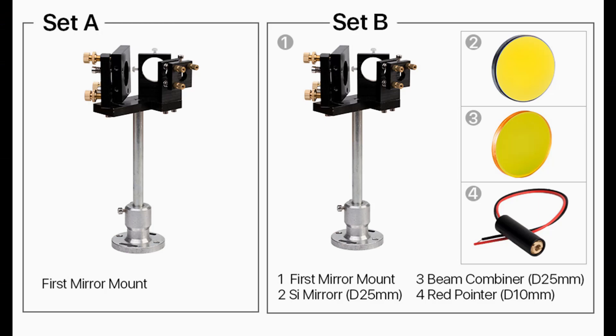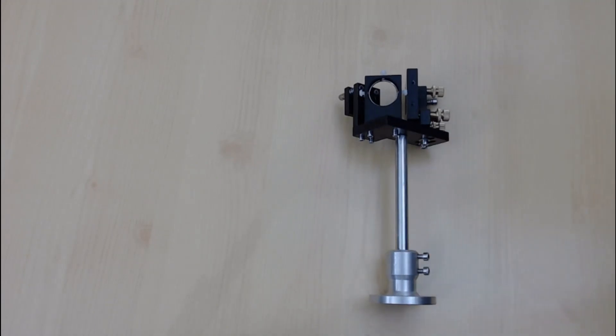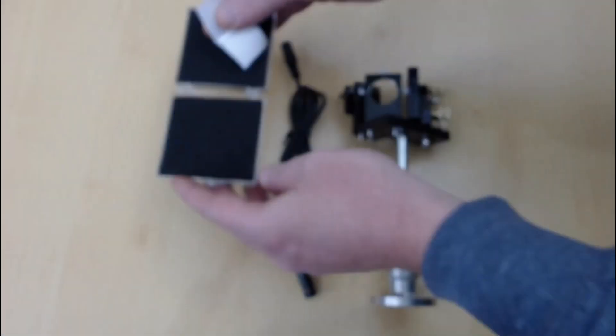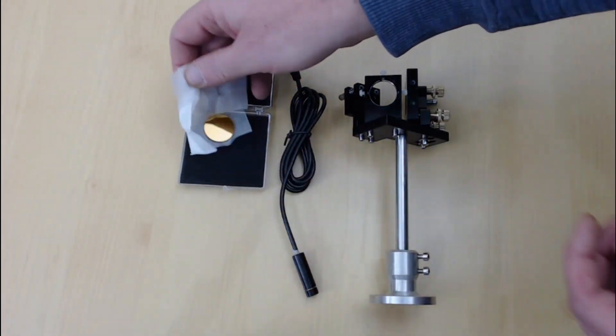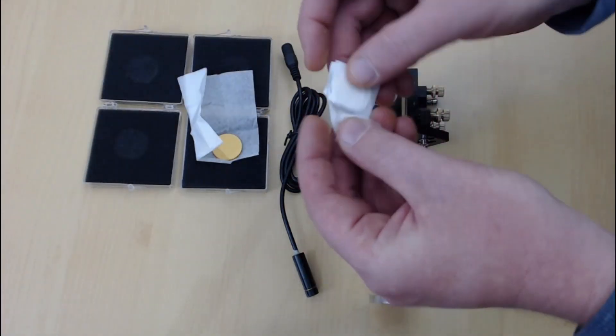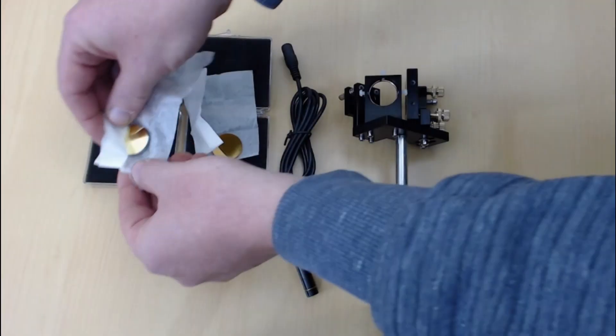So what comes in the kit? Well the parts I have are set B of the Cloudray E-series first mirror mount beam combiner. It includes these items: the mirror mount and base, a red dot pointer, the laser beam combiner lens and a Cloudray laser 25mm mirror.